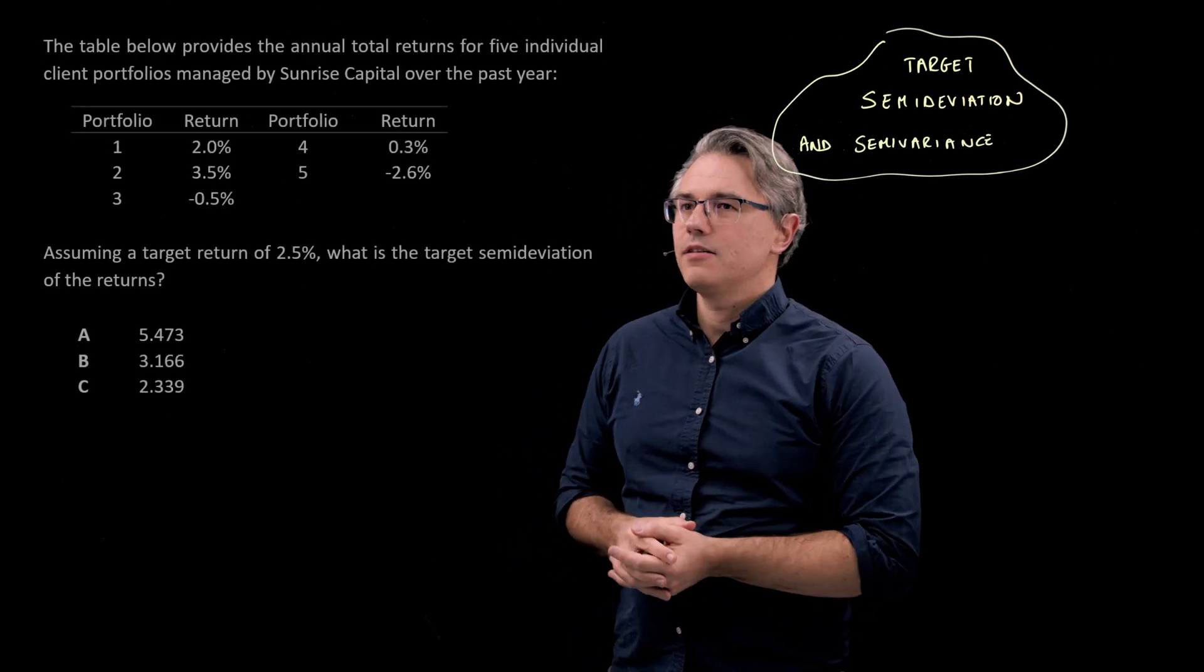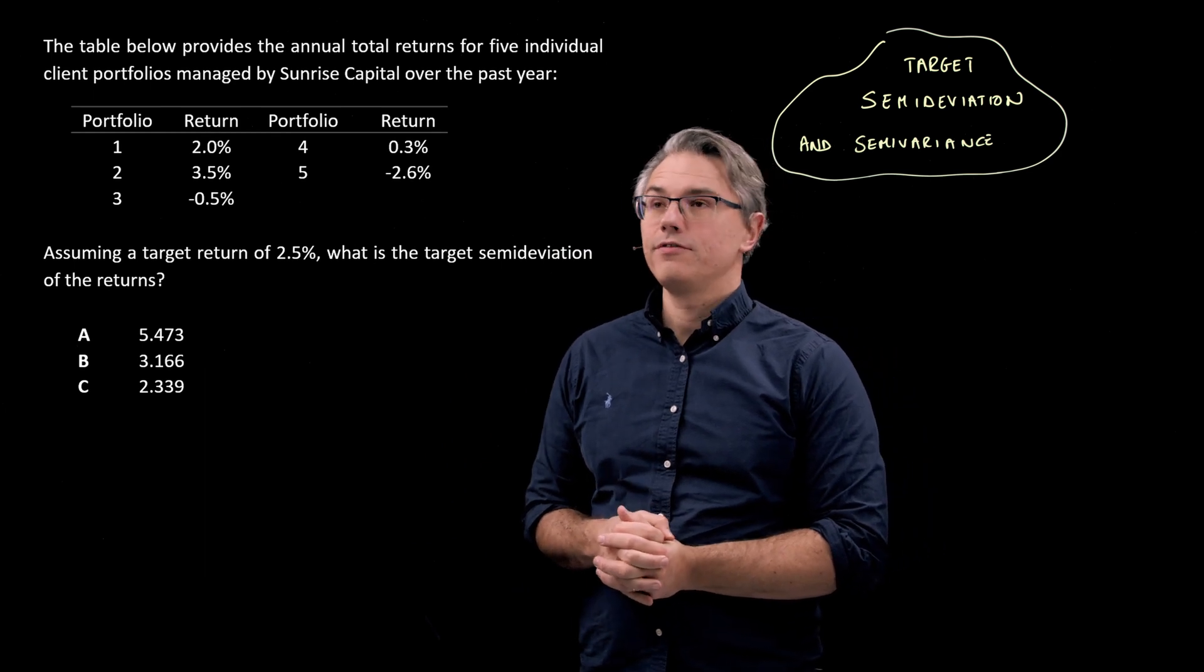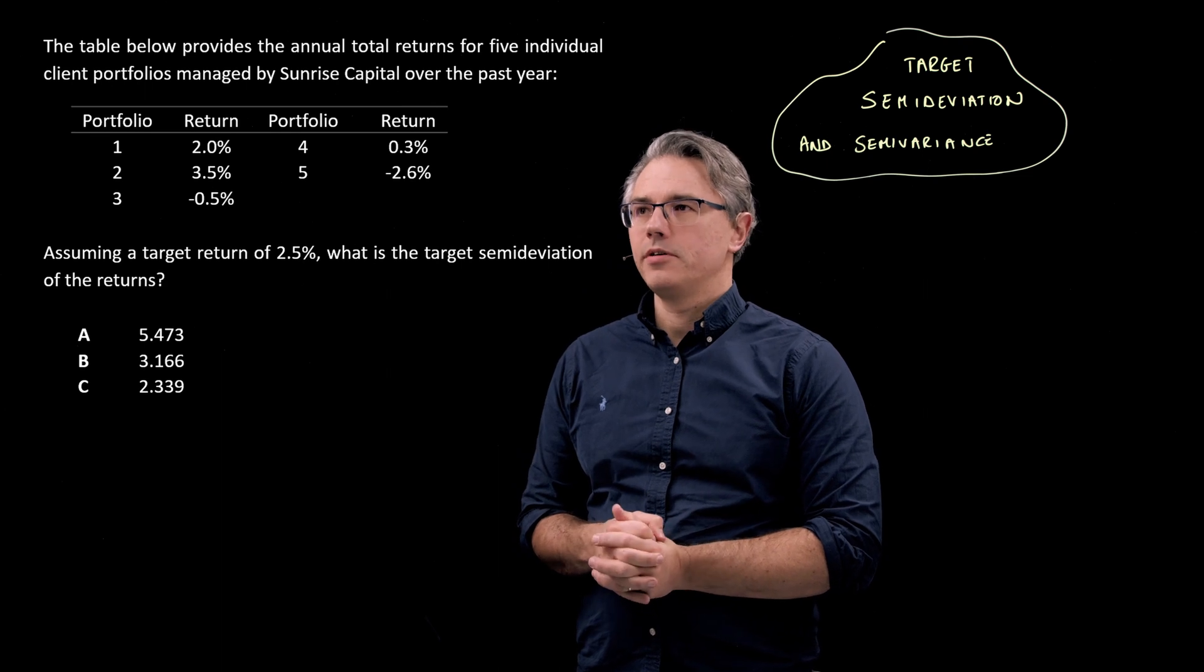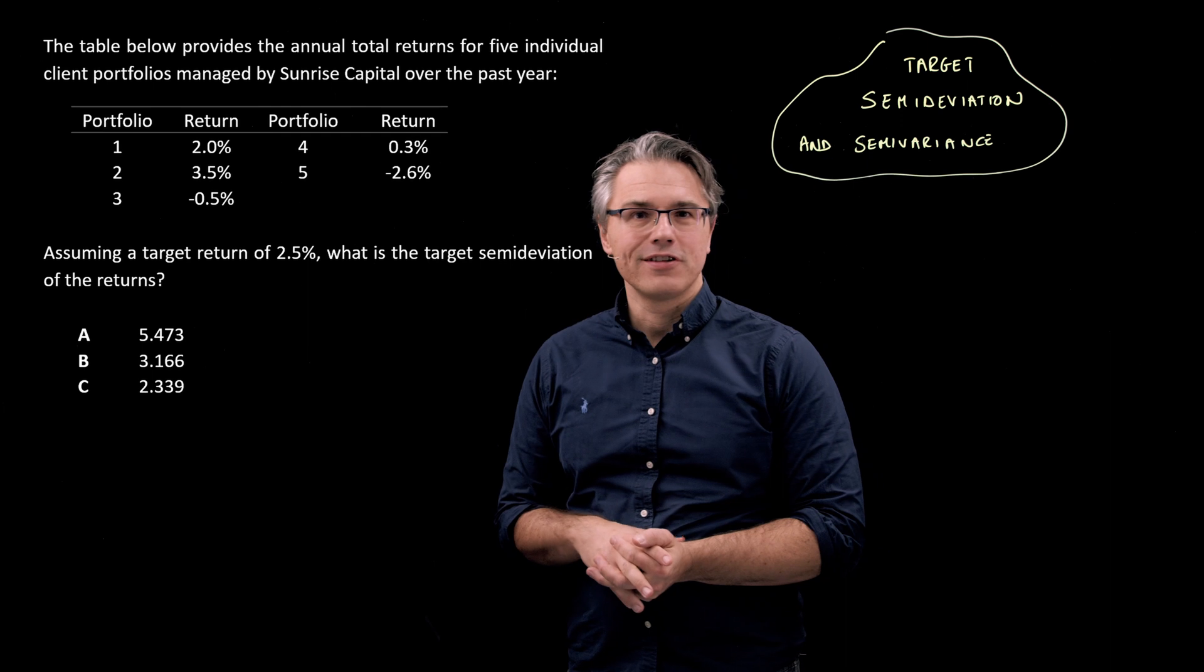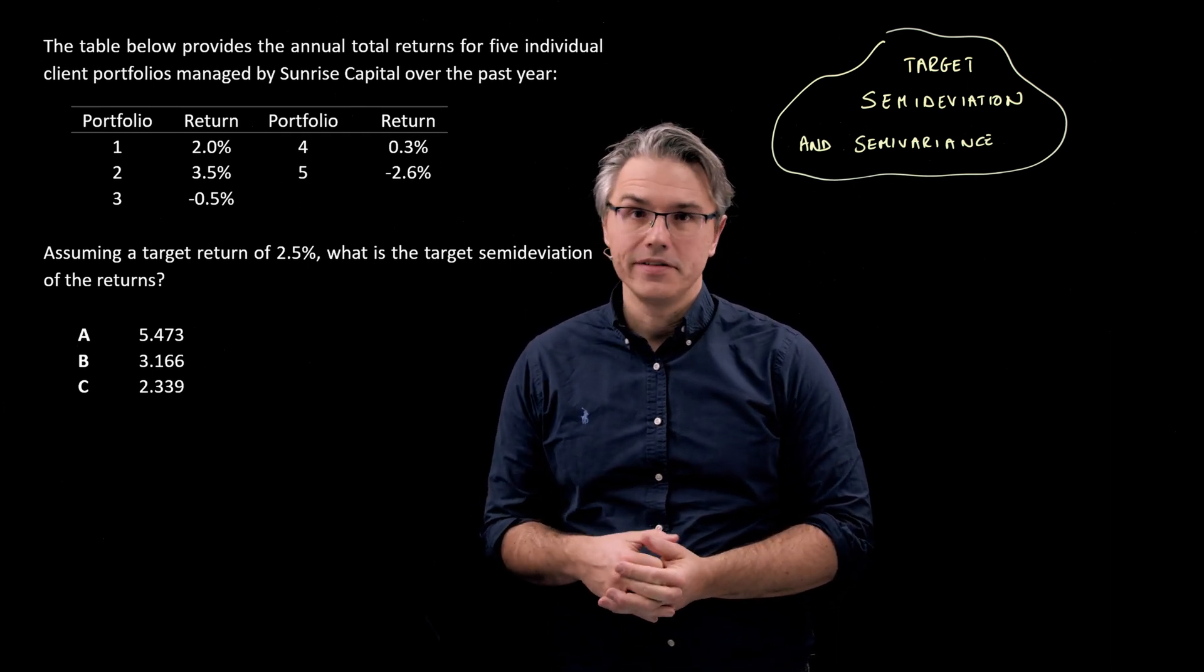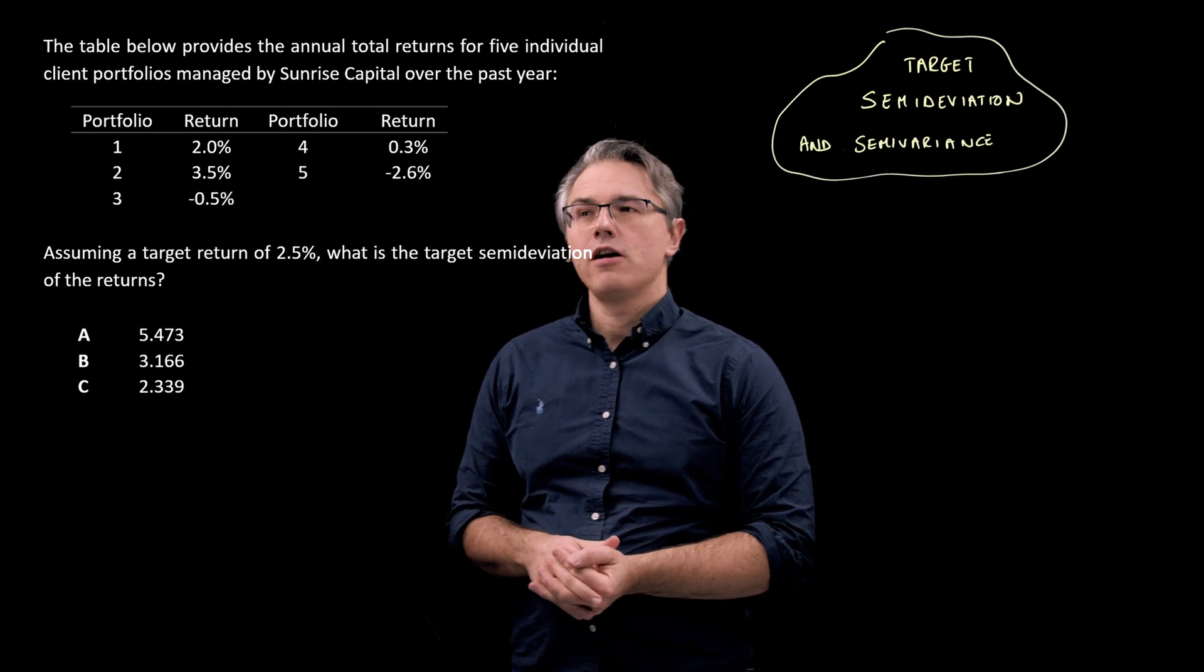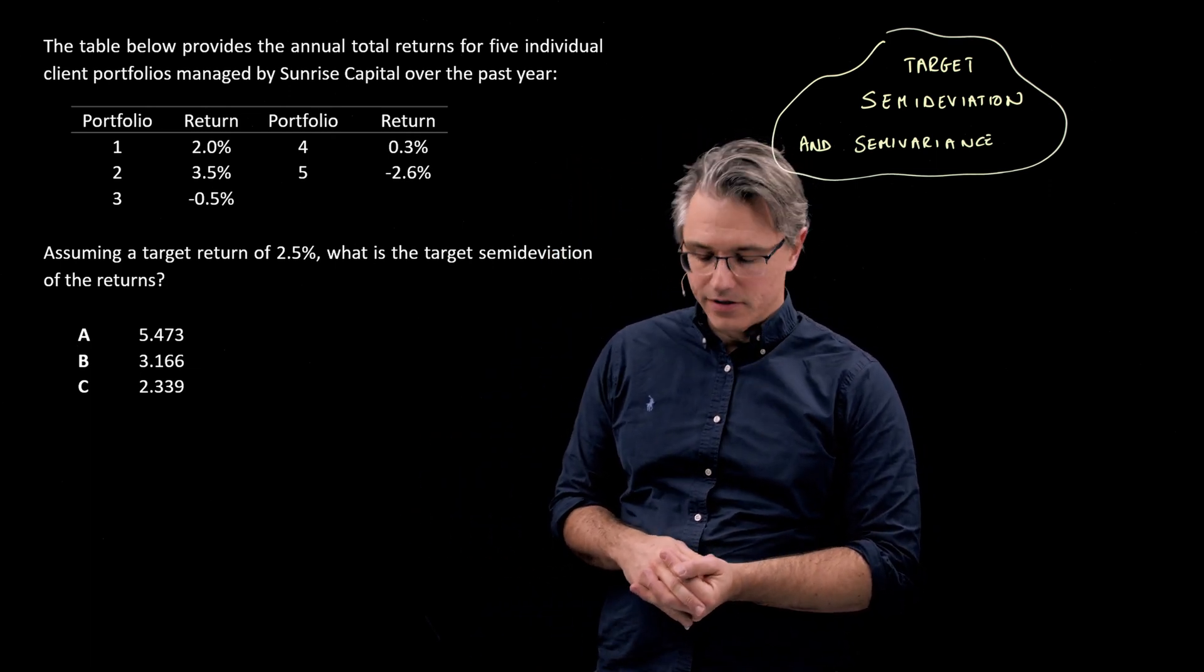So this is the question which I want us to have a go at. The table below provides the annual total returns for five individual client portfolios managed by Sunrise Capital over the past year. The same data that we've had in previous questions on other measures of dispersion. Assuming a target return of 2.5%, what is the target semi-deviation of the returns?